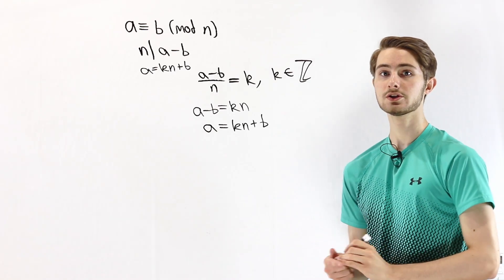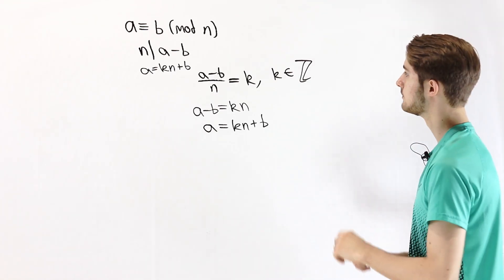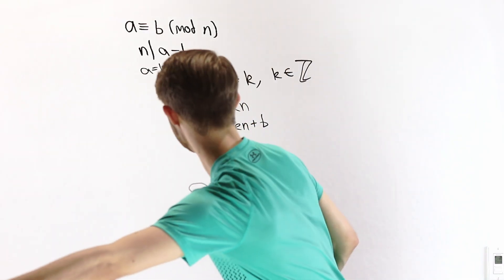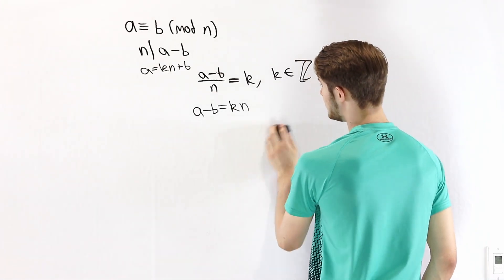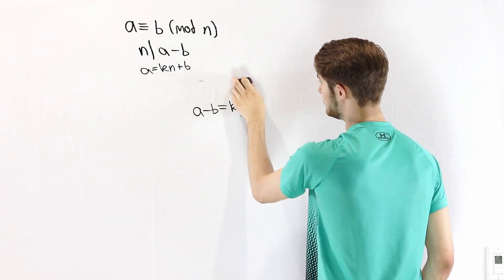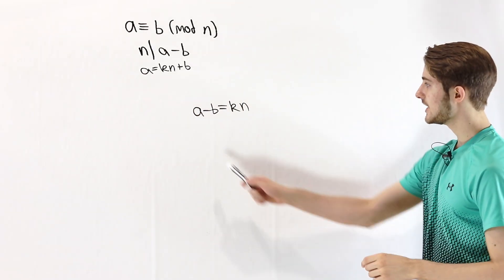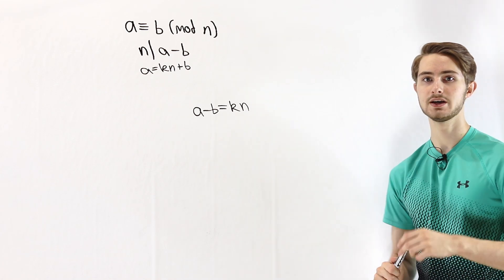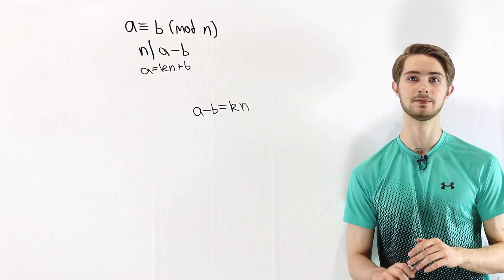Now I want to look at one more definition that will be very useful when we start looking at the properties of congruence mod N. We know that A minus B equals some multiple of N, and we're going to express A and B in terms of N using something called the division algorithm.